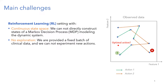The second problem is that we cannot explore the system in this scenario. Most reinforcement learning algorithms are based on trial and error — in chess, Go, or any games, we keep trying new actions and see whether they lead to high or low reward. But this is not something we can do in healthcare, or in most real-life high-risk settings. We cannot try new treatments on patients just to learn more about those treatments.